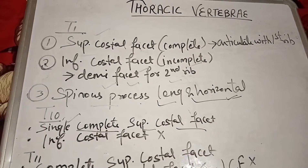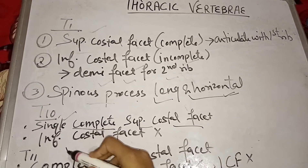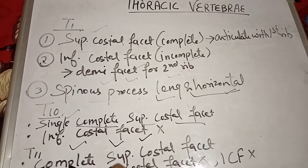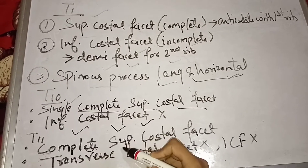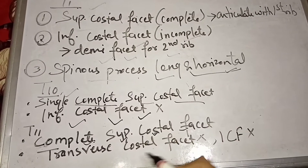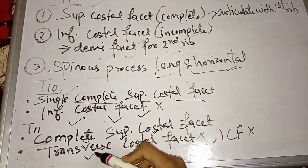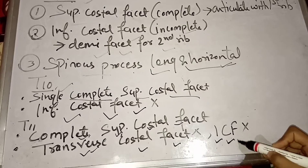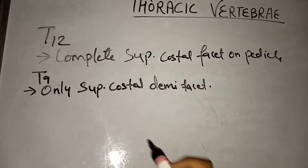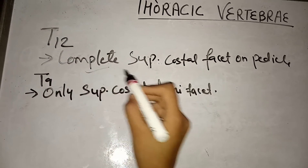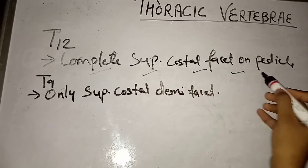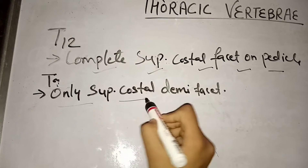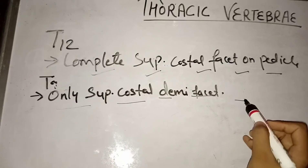T10 vertebra has a single complete superior costal facet and does not have an inferior costal facet. T11 has a complete superior costal facet and absence of both transverse costal facet and inferior costal facet. T12 vertebra has only a complete superior costal facet on its pedicle. T9 has only a superior costal demi facet.